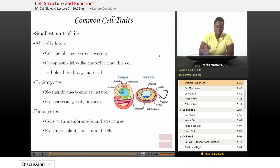Let's start with talking about the common cell traits. All cells are the smallest unit of life. You can't get smaller than a cell and still be able to hold all the functions necessary for life to occur.